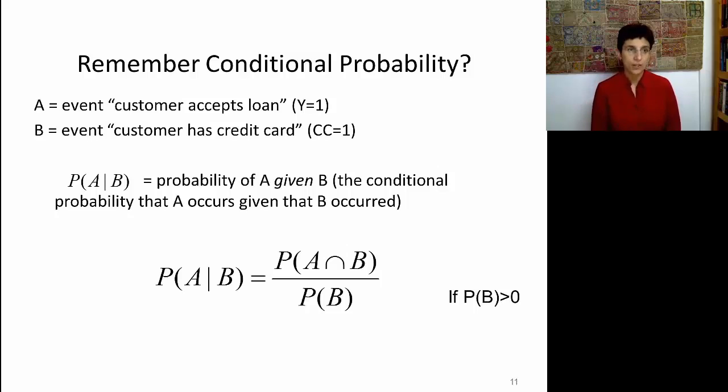Remember conditional probability from your basic course. Assume that we have two events: A is the event the customer accepts the loan, B is the event the customer has a credit card. This notation here means the probability of event A given that event B occurred. So in this example, this means the probability that the customer accepts the loan given that he or she has the credit card. The equation for conditional probability is equal to the probability that both A and B events occur divided by the probability of B.